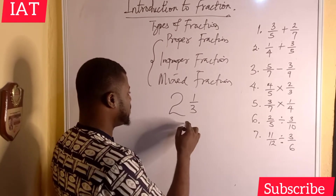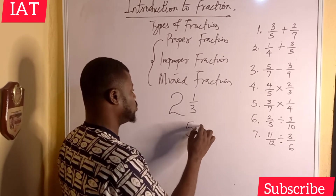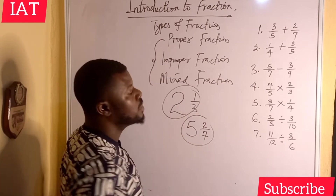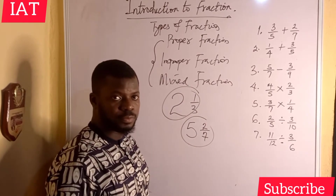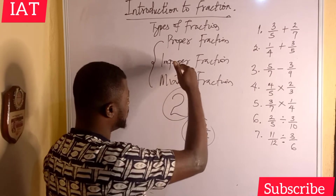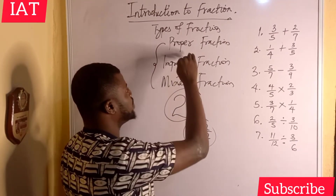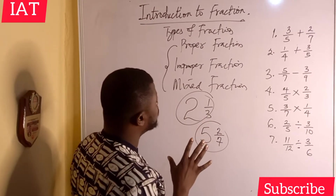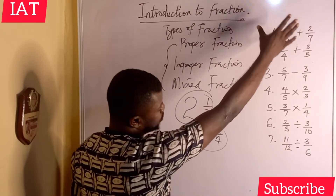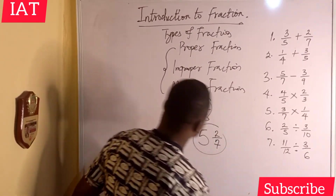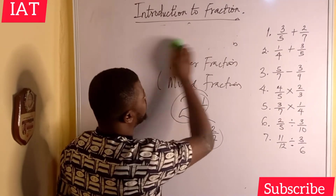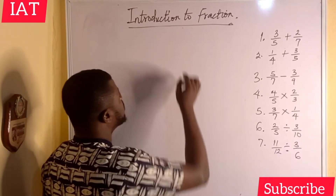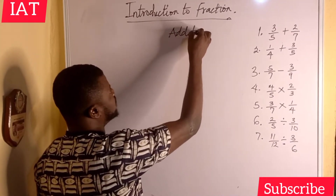Another example of mixed fraction is five and two over seven. In the next video I'll show you how to convert between mixed and improper fractions. Now, under the properties of a fraction, we have: addition of fractions, subtraction of fractions, division of fractions, and multiplication of fractions.